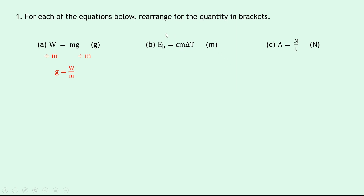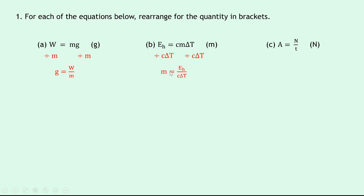In part B we've got Eh equals c m delta t — you'll come across this equation in the properties of matter topic — and we're asked to rearrange for m, which is mass. We need to get rid of c and delta t on the right hand side, so we divide both sides by c times delta t. That gives us m on its own, and putting m on the left hand side we get m equals Eh over c times delta t.